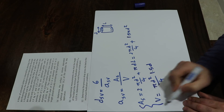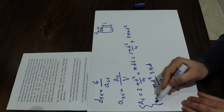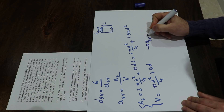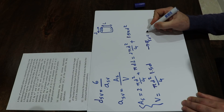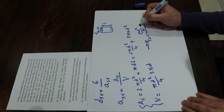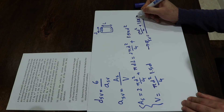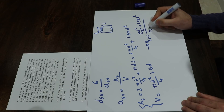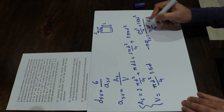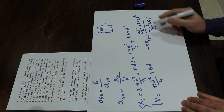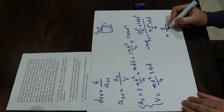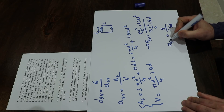Based on these two expressions, A_SV equals the surface area divided by the volume: (2 pi D squared over 4 plus 1.5 pi D squared) divided by (pi D squared over 4 times 1.5 D). Simplifying this fraction gives A_SV equal to 8 divided by (1.5 times D).